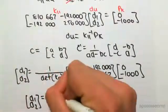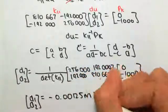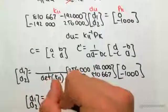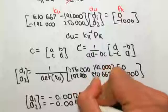minus 0.00125, that's meters, and d2 would equal minus 0.004750 meters.